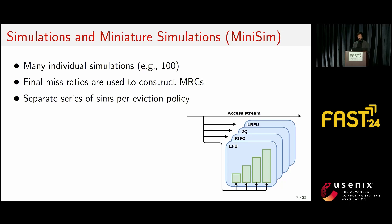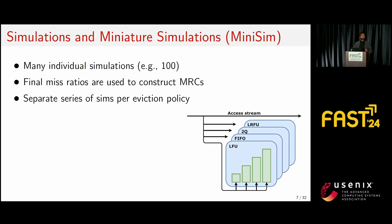How does MiniSim do this? It performs many individual simulations of a cache, each independent of one another, each configured to a varying size. The simulations are all fed the same access stream, and the resulting miss ratios are plotted into the miss ratio curve. To reduce overhead, MiniSim employs a sampling technique known as shards to spatially sample the accesses and produce MRCs using only a subset of total accesses. This process is repeated for every eviction policy you want to generate an MRC for.